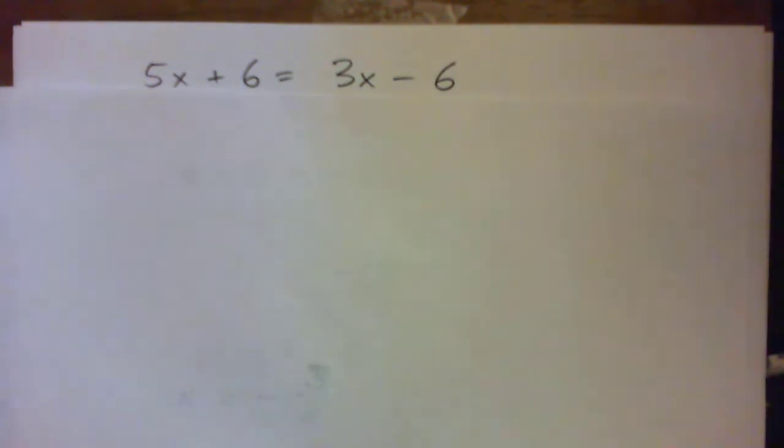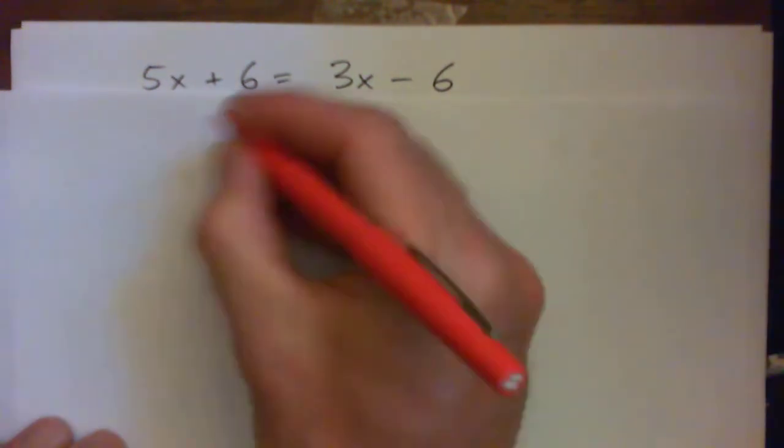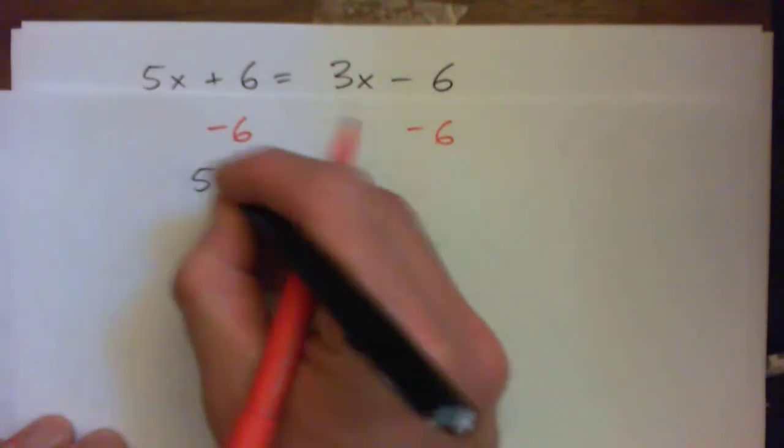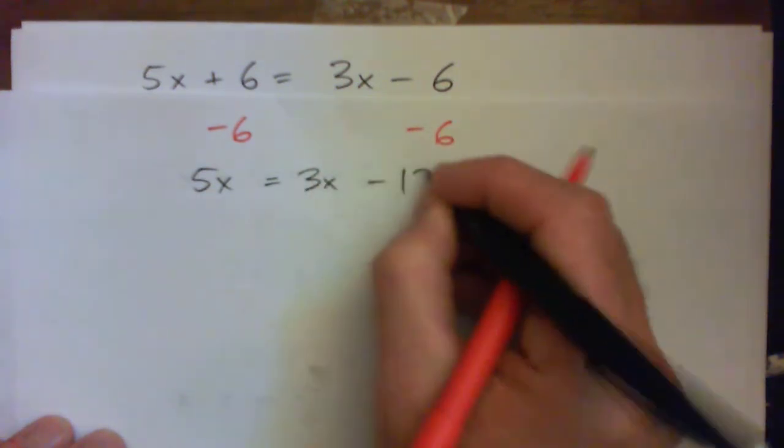And really quickly, I'm going to show them just another way. So what if somebody subtracted 6 from both sides? That would also have been fine because, look, 5x equals 3x minus 12.